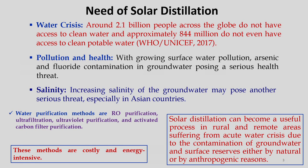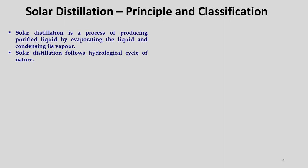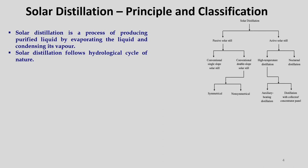Solar distillation can become a useful process in rural and remote areas suffering from acute water crisis due to contamination of groundwater and surface reserves, either by natural or anthropogenic reasons. Now let us discuss the principle and classification of solar distillation. Solar distillation is a process of producing purified liquid by evaporating the liquid and condensing its vapor. It follows the hydrological cycle of nature and can be classified broadly into two classes: passive solar still and active solar still.